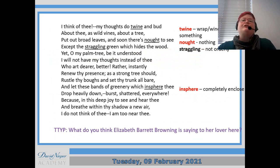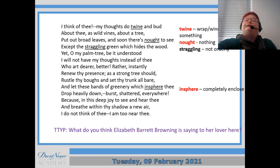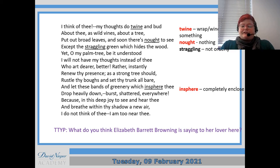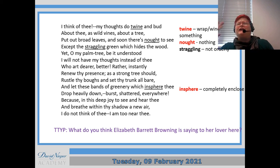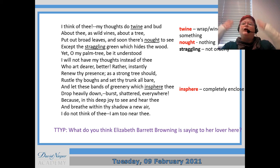So the poem is on the board now. If you've got your own anthology you can use that to help as we go through this. If you don't have your own anthology then you need to either find an annotated copy online or print this off and write on it as we go through. There are some words defined on the right-hand side: 'twine' is when you wrap around something; 'nought' is another way of saying nothing; 'straggling' means untidy, not orderly; and 'insphere' means totally enclosed, to wrap around something.